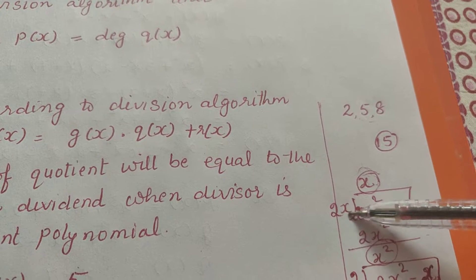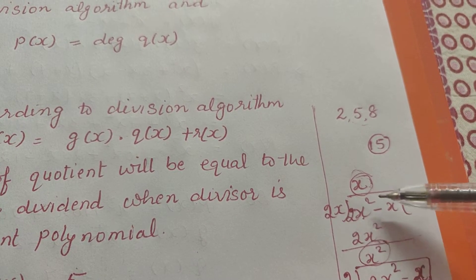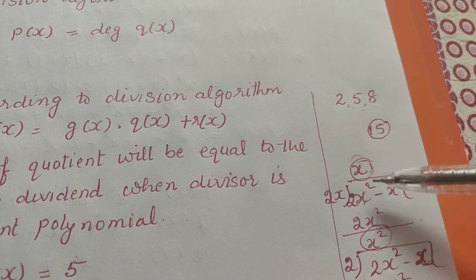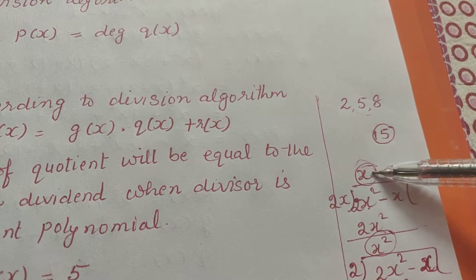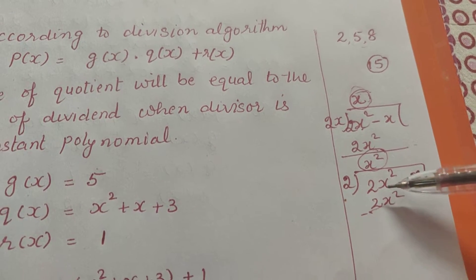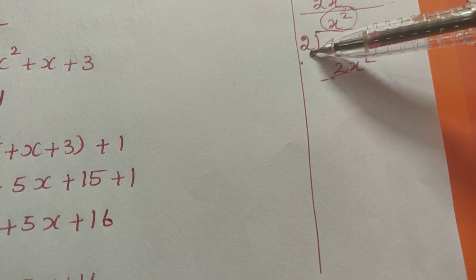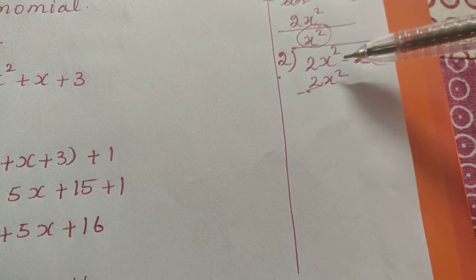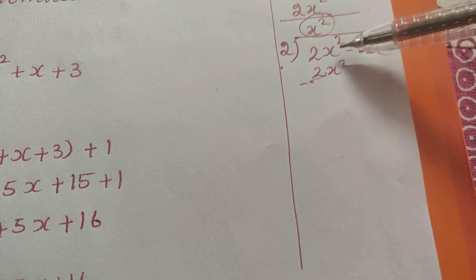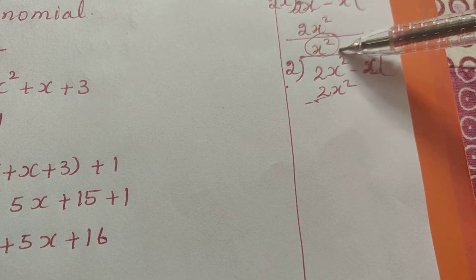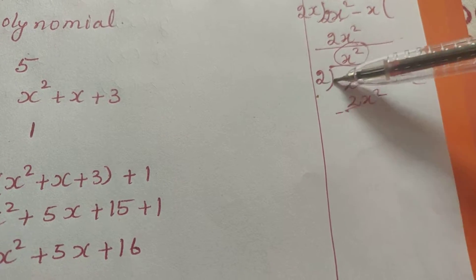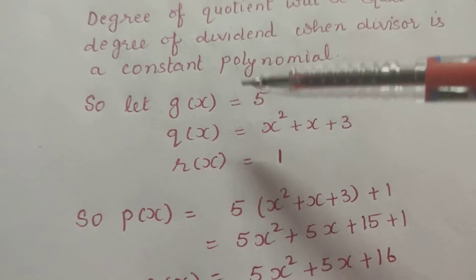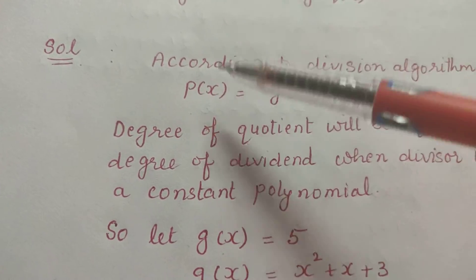For example, if I divide 2x² − x by 2x, the first step gives quotient x — here the degree of the dividend is 2 but the degree of the quotient is 1; they don't match. However, if I divide 2x² − x by 2 (a constant), the quotient is x², and the degree of the dividend and the degree of the quotient are both 2. So degrees match only when we divide by a constant polynomial.